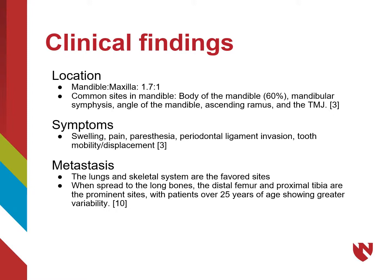Some symptoms of osteosarcoma include swelling, pain, paresthesia, periodontal ligament invasion, as well as tooth mobility and/or displacement. As far as metastases, the lungs and skeletal system are the favored sites. When spread to the long bones, the distal femur and proximal tibia are the most prominent sites, with patients over 25 years of age showing greater variability.